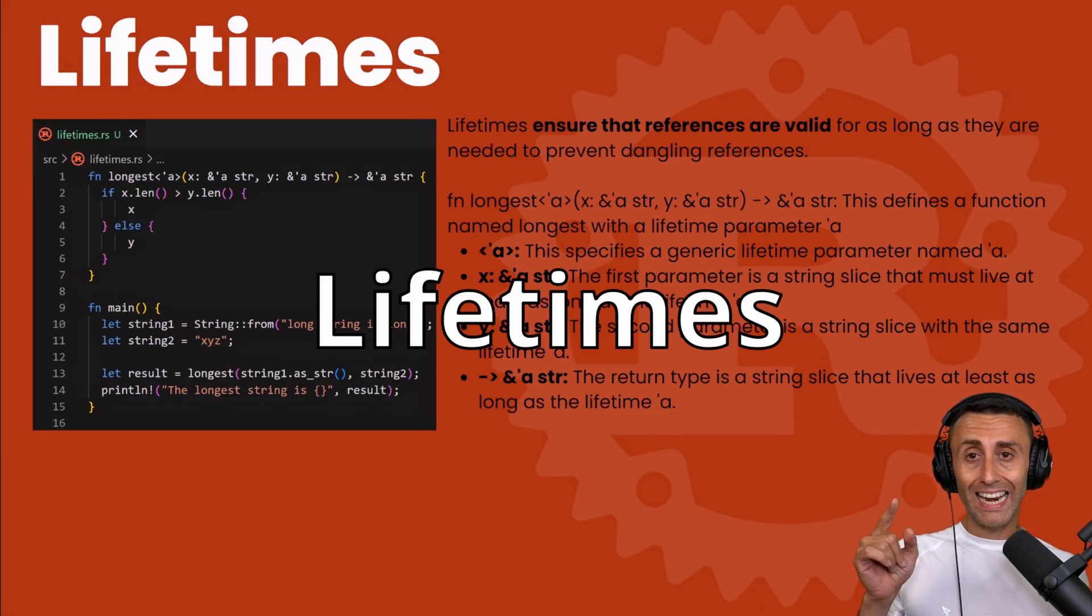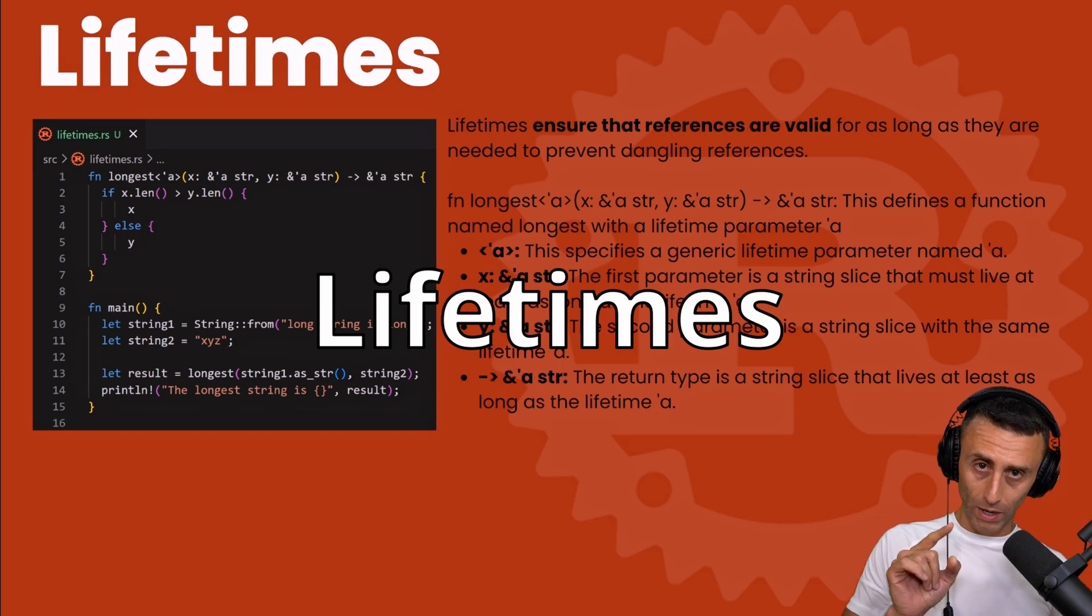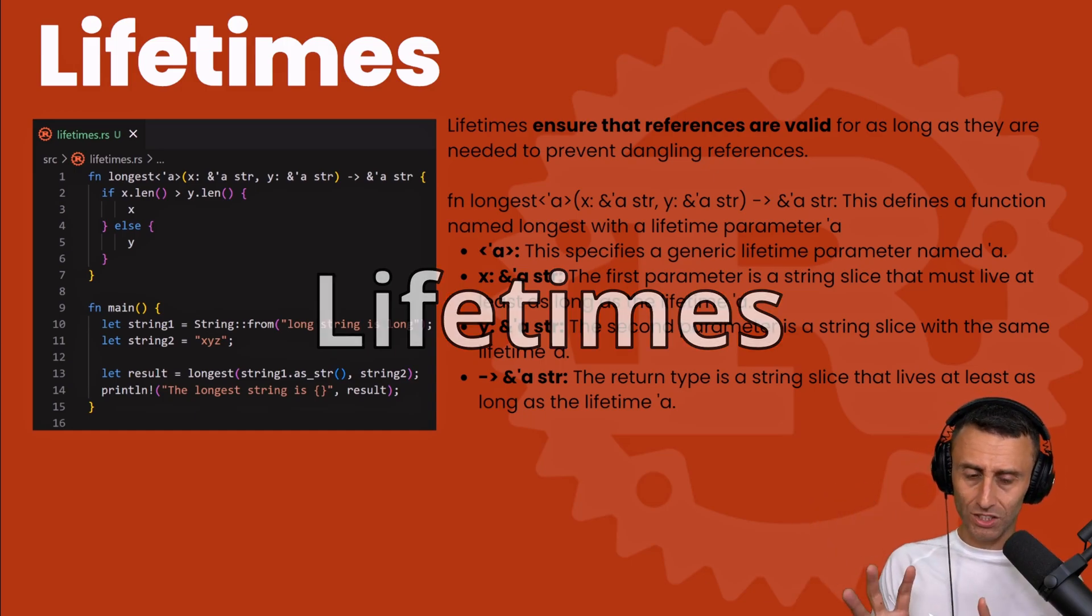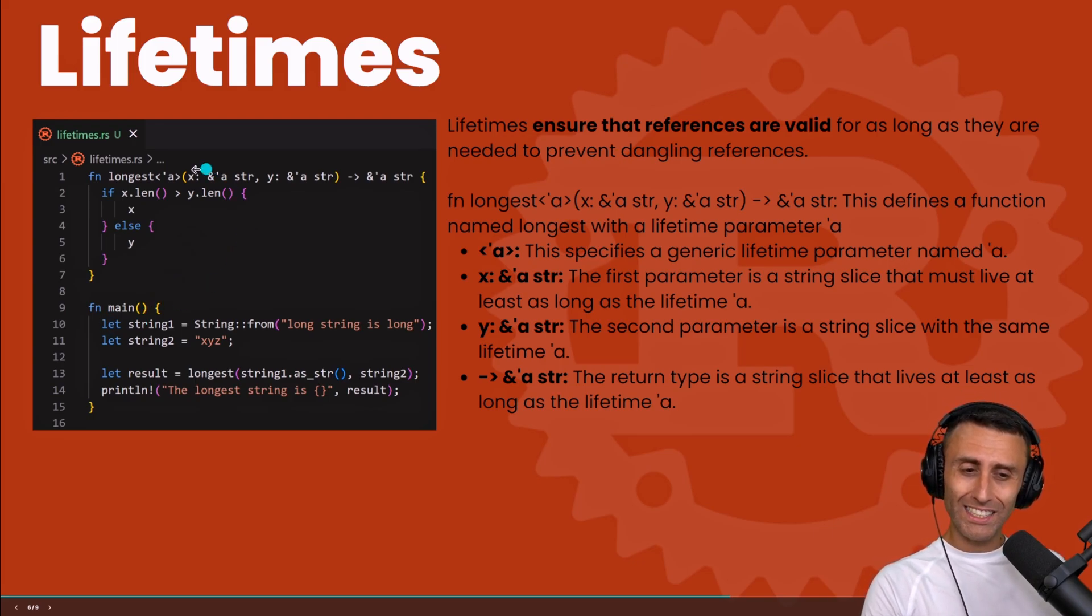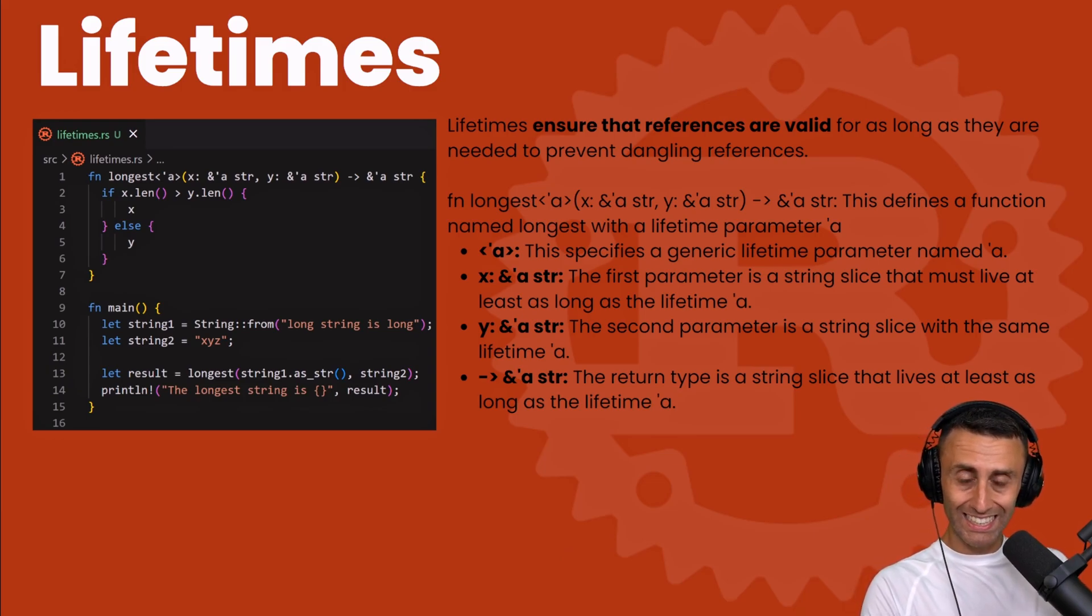Let's see also an introduction to lifetimes. We'll have a specific lesson, but let's try to grasp the concept here. Let's check the code here - it's not very easy to understand, but focus on line one. The lifetimes ensure that the references are valid for as long as they are needed, and this is to avoid dangling references in Rust. If you are not getting what I'm saying, check references, borrowing, and ownership in Rust in the previous videos.